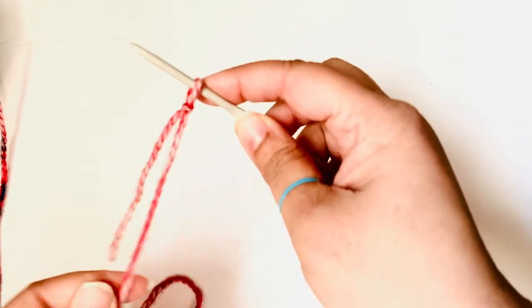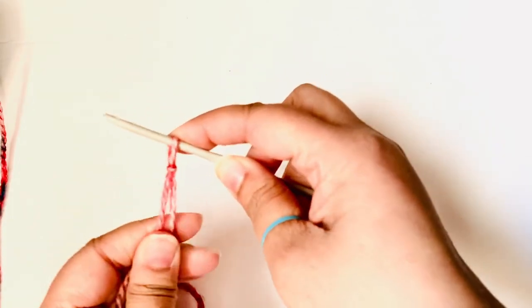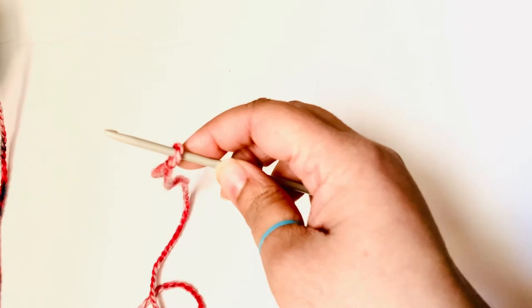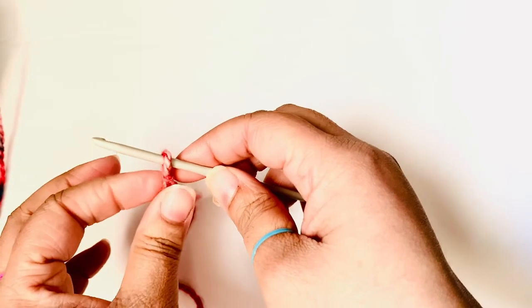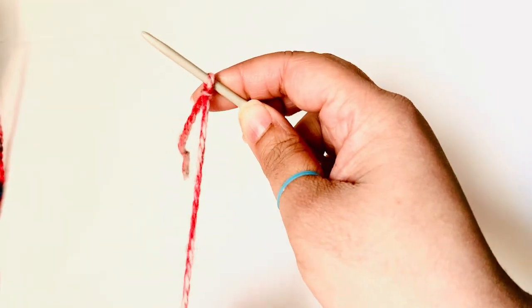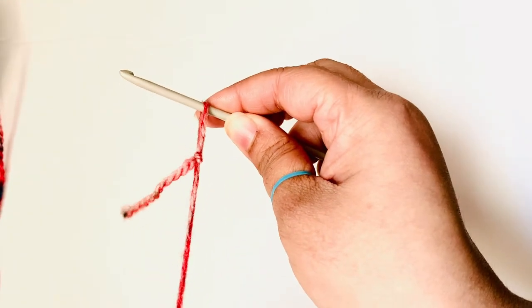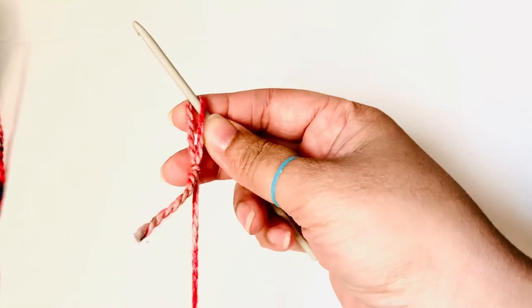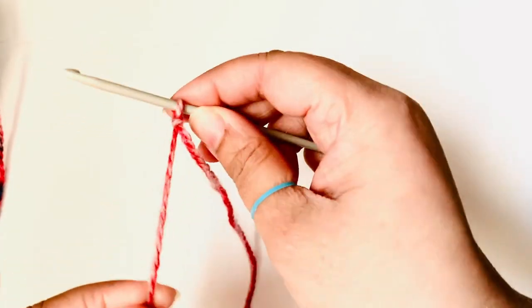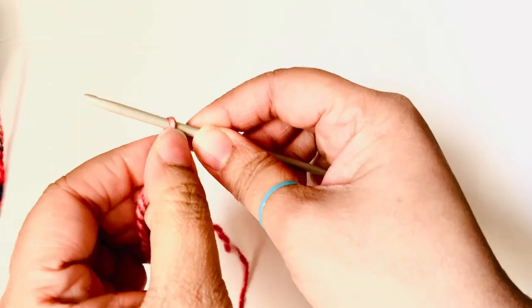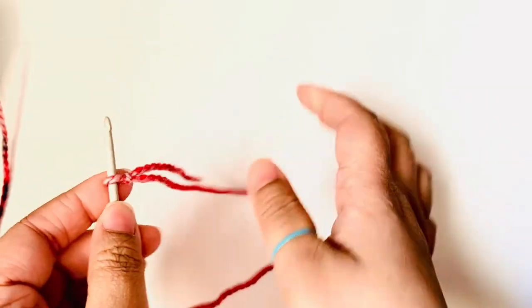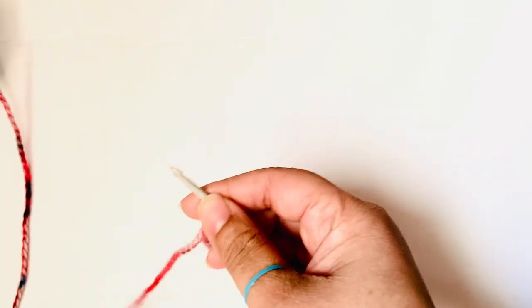Now I make sure that the whole tail doesn't come through the loop. And then I hold both ends and then tighten it, and that's my slip knot. Why is it called a slip knot? Because I can adjust it. If I pull the long end, the loop becomes larger. If I pull the tail end, it becomes smaller or shorter.